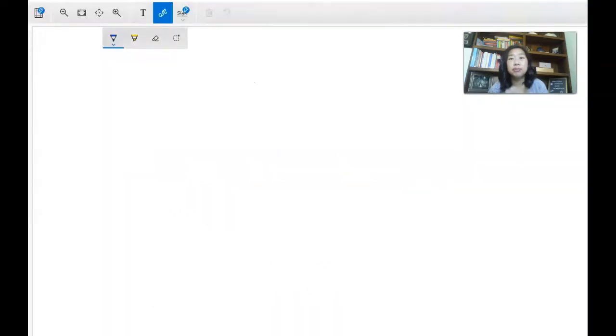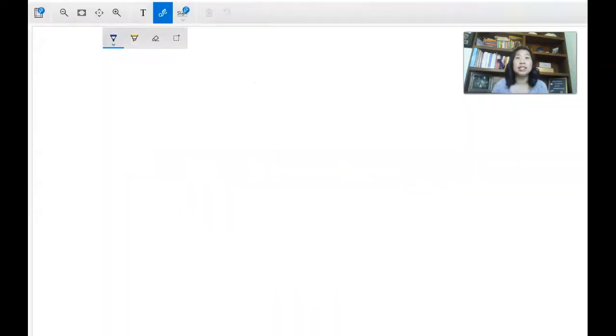So let's go through some examples here of what I mean. So if I had, let's do a couple of examples of same sign. So look, if I have -3 + (-5), they're the same sign because they are both negative. So we're going to add them. 3 + 5 = 8 and keep the negative sign.